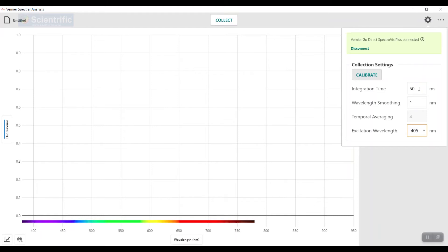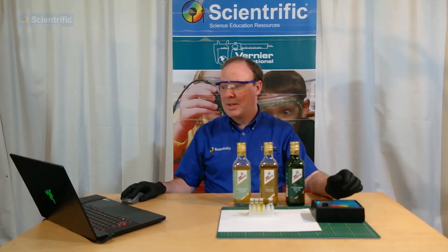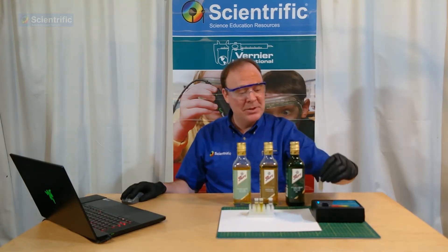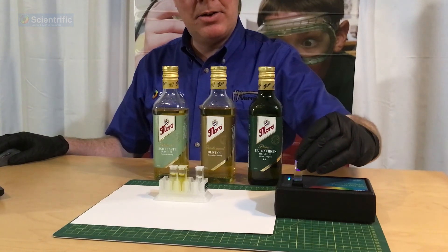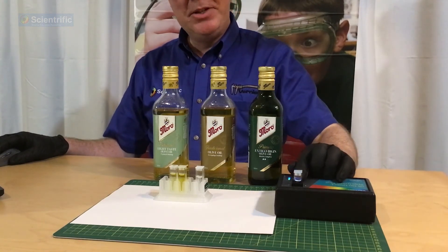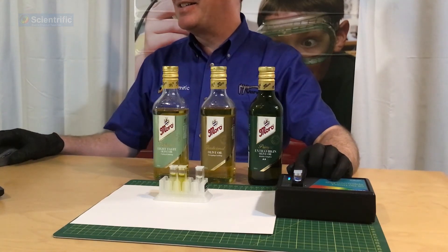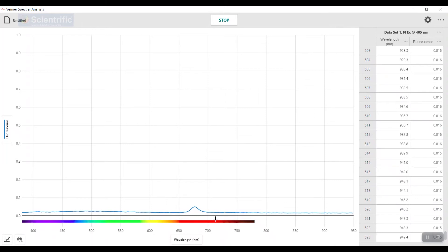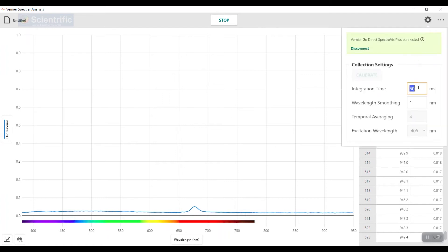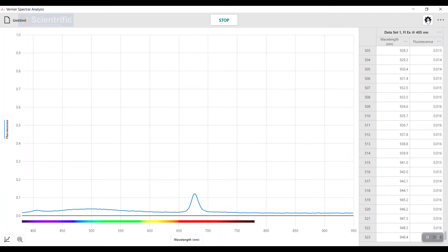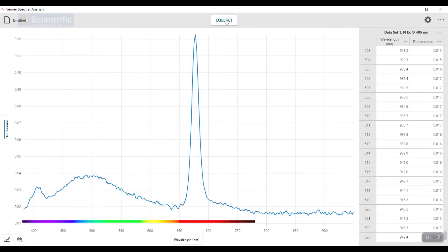First, I'll hit collect. Right now, since we have nothing in there, there's nothing to see. I'm going to take our first cuvette, which has the light taste olive oil, and pop that in. You may notice it's glowing a little bit as it fluoresces, but we only have this tiny peak on the screen. Since I want the peak to be taller, I'm going to change the integration time to 100. There we go—we have a nicer peak. I'll stop that, and there's our peak.